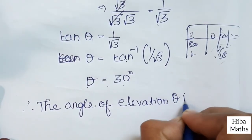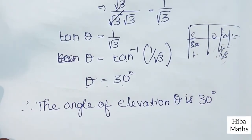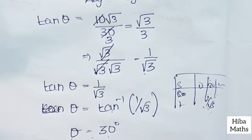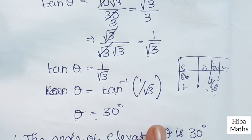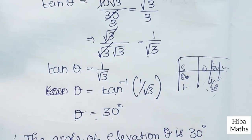Therefore theta is 30 degrees. It is very simple — using tan theta equals opposite by adjacent, the values directly cancel to give 1 by root 3. The angle of elevation is 30 degrees. Thank you so much for watching.